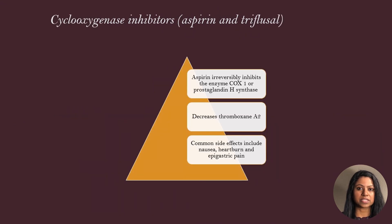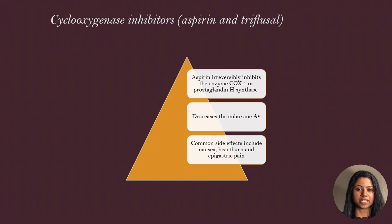Let's begin with cyclooxygenase inhibitors. This class includes aspirin and triflusal. Aspirin is an irreversible inhibitor of the enzyme COX-1, or prostaglandin H synthase. It inhibits the synthesis of thromboxane A2, thereby inhibiting platelet aggregation.